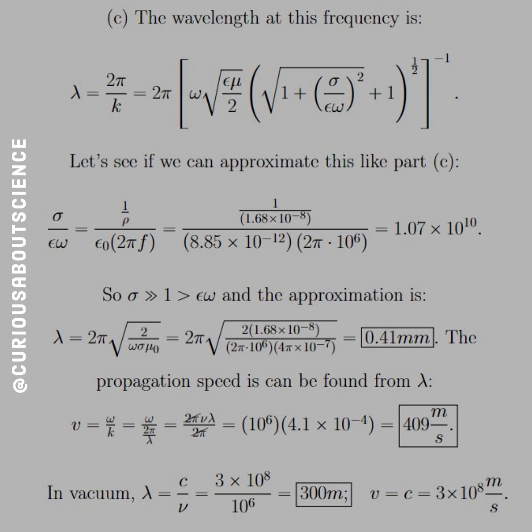And what we see after is that we get a wavelength of 0.41 millimeters. The propagation speed can be found from lambda via v equal omega over k, where k equals 2 pi over lambda, and omega equals 2 pi nu. So the factors of 2 pi cancel, and you're left with nu, this linear frequency times the wavelength, makes sense. 1 over seconds times meters. And we see that the velocity is equal to 409 meters per second.